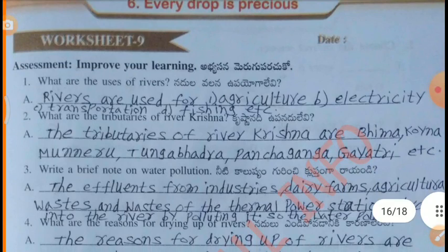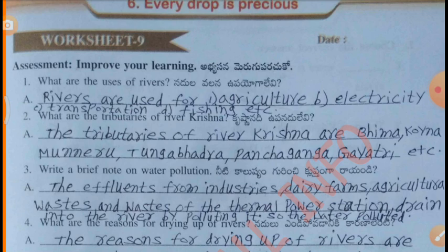Worksheet 9, Assessment: Improve your learning. What are the uses of rivers? Rivers are used for agriculture, electricity, transport, and fishing. What are the tributaries of river Krishna? The tributaries of river Krishna are Bhima, Koina, Munneru, Tungabhadra, Panchaganga, Gayatri, and others.